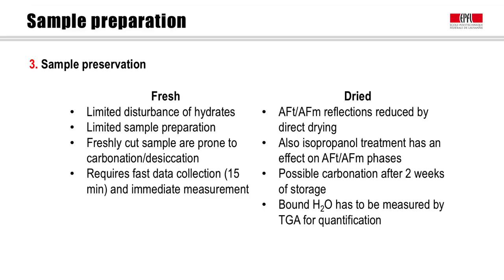This slide summarizes the advantages and disadvantages of working with fresh or dried hydrated cement samples. The major advantage of measuring on fresh slices is that the hydrate assemblage is practically undisturbed if one can measure immediately and rapidly. On the other hand, dried samples are much more resistant to carbonation and offer more flexibility in timing of measurement and storage. However, it is advisable to limit the time between stoppage and measurement as much as possible. Samples stored for more than two weeks in a protected atmosphere start showing signs of carbonation or decomposition. The major downside is that ettringite and AFM reflections are reduced by any drying operation.